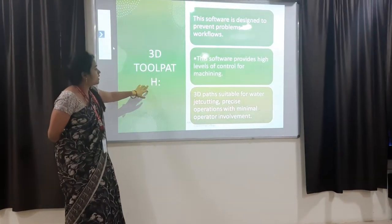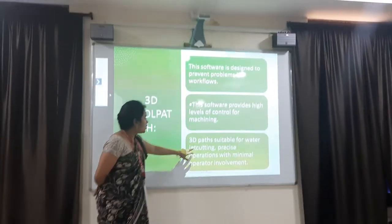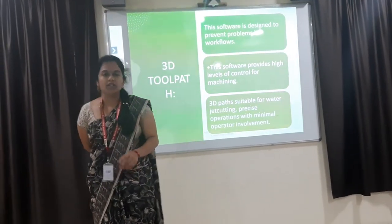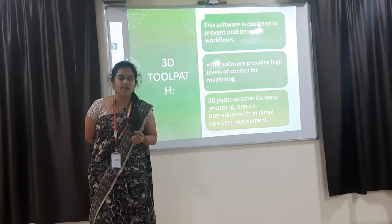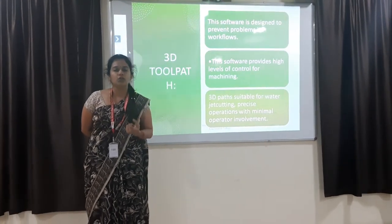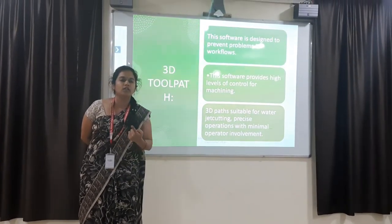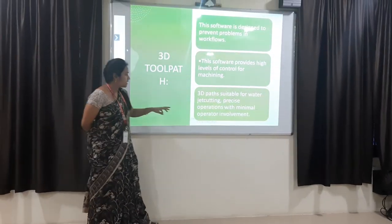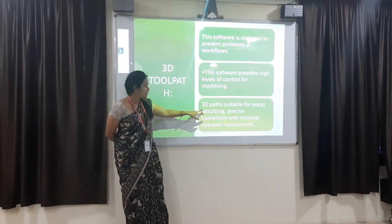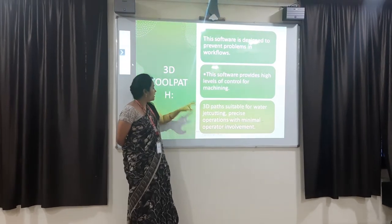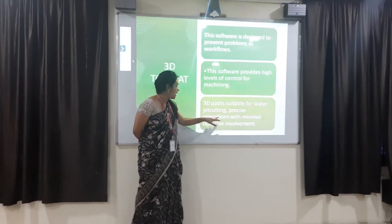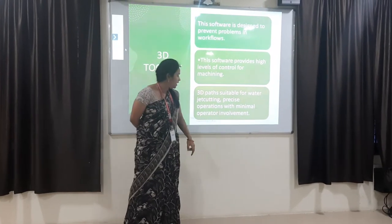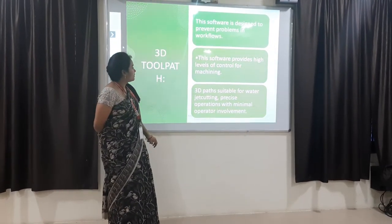For 3D toolpaths, wire EDM — wire electron discharge machining — can be used, where a head-like structure removes material over the surface of the workpiece. This 3D path material removal can also be used in water jet machining and precision operations with minimum operator involvement.